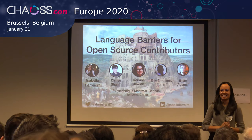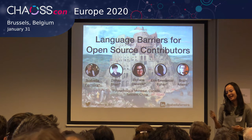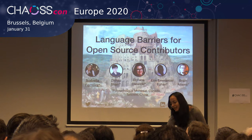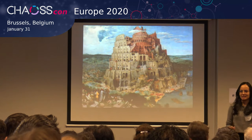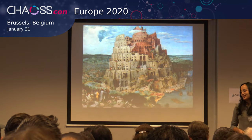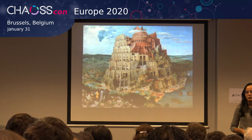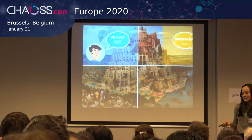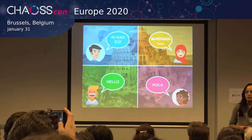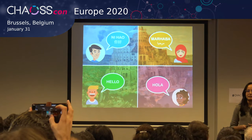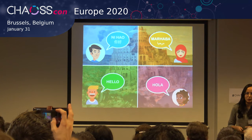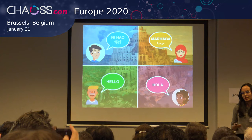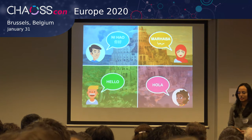My name is Isabella. I'm a PhD student at Polytechnic Montreal and I'm going to talk about language barriers for open source contributors. The Tower of Babel is like an open source project — we have people that want to build software and nowadays with open source they come from different places and speak different languages. Communication is very important, and if they cannot understand each other, the quality might not be good or you're not going to attract and retain those developers.